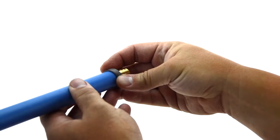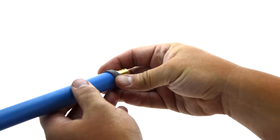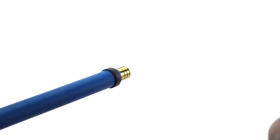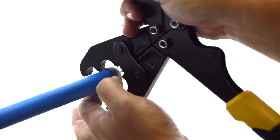Once the fitting has been inserted fully, position the properly sized copper crimp ring approximately one-eighth to one-quarter of an inch away from the end of the tube around the fitting.